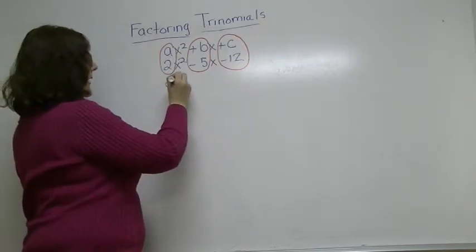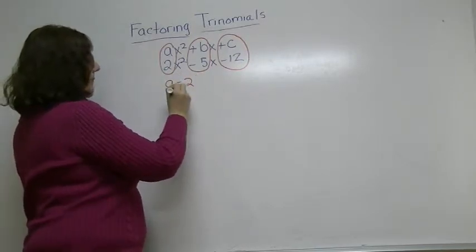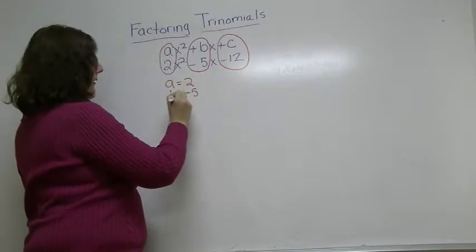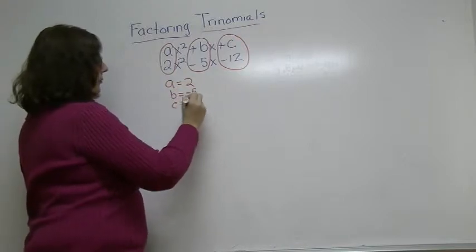And our C term is negative 12. So we're going to write that out: A is equal to 2, B is equal to negative 5, and C is equal to negative 12.